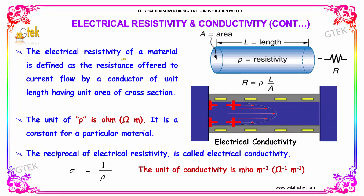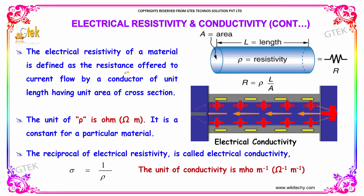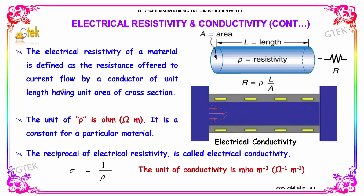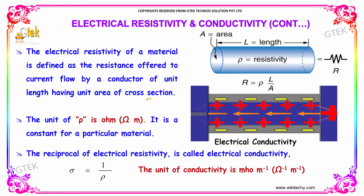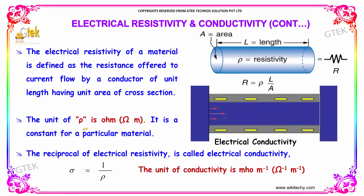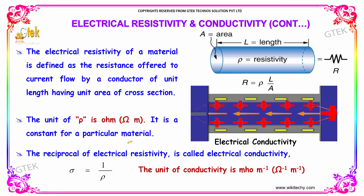The electrical resistivity of a material is defined as the resistance offered to current flow by a conductor of unit length having unit area of cross-section. The unit of rho, or resistivity, is ohm meter. It is a constant for a particular material.